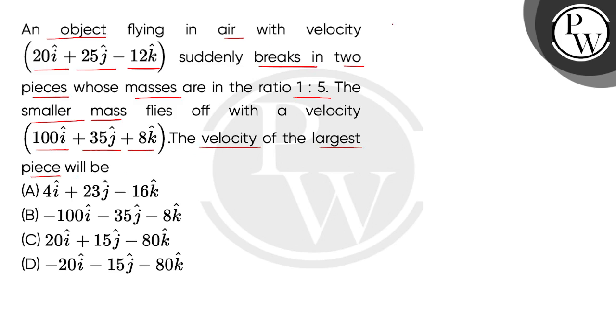Given our question, one object. Let's take the mass of this object as m. When it breaks in air into two pieces, the mass of these two pieces are in the ratio of 1 is to 5. So what do we consider the first mass? By the ratio, m divided by 6. And the second mass we consider 5m divided by 6. The ratio is 1 is to 5.